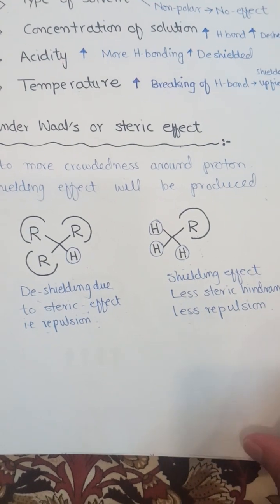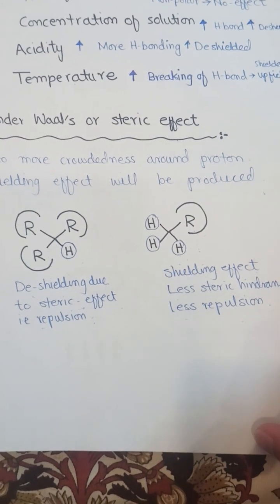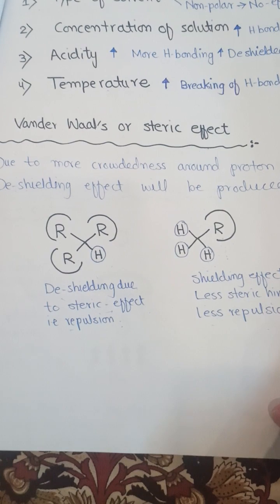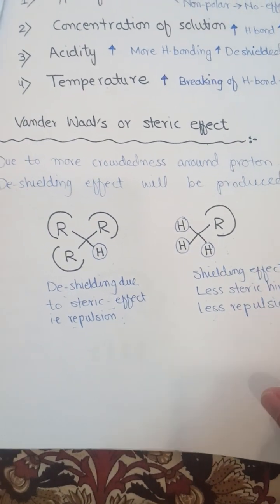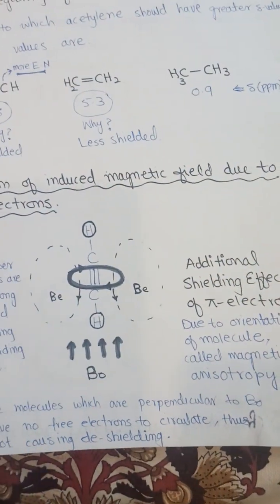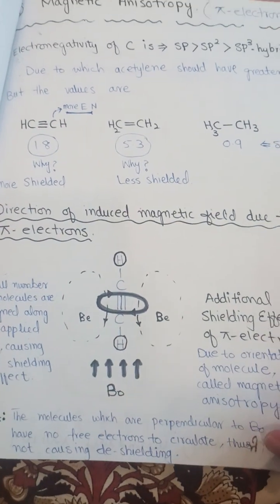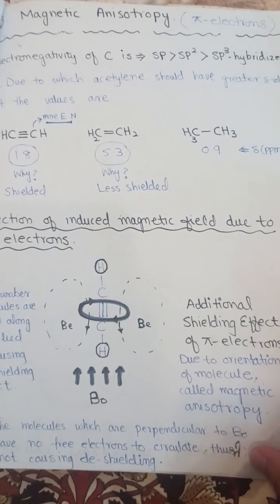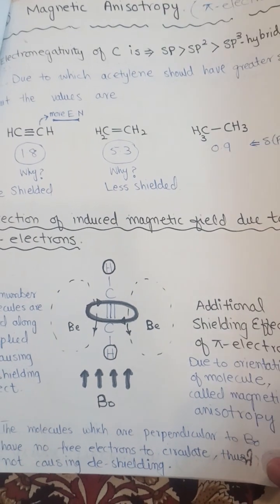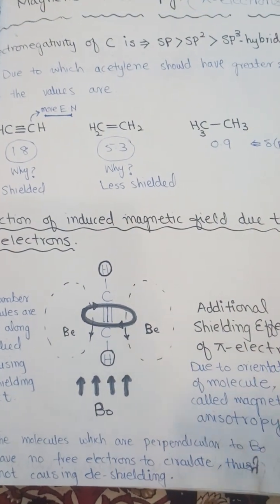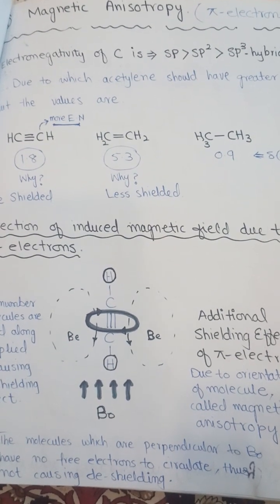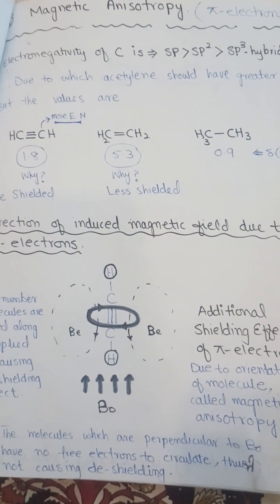These are the factors we studied today that affect the position of NMR signals. In our next class, we will study magnetic anisotropy, or the effect of pi electrons on the shielding or deshielding effect of the proton and the position of NMR signals. Thanks for watching.